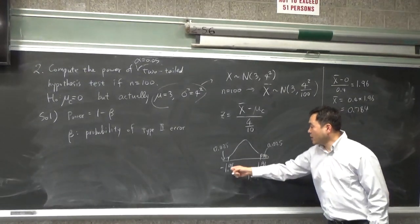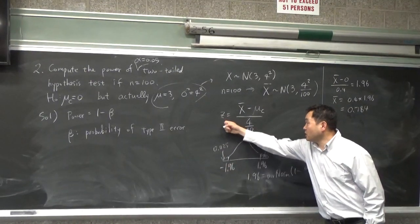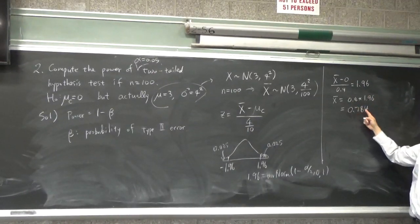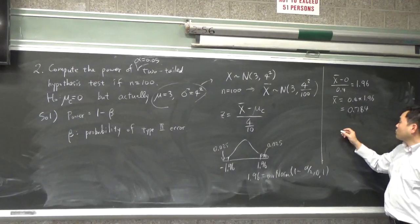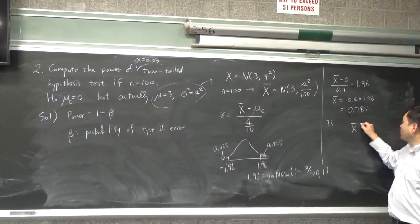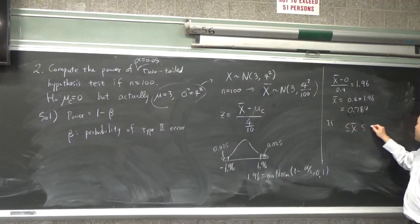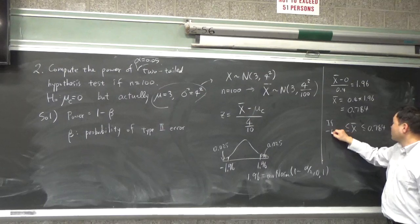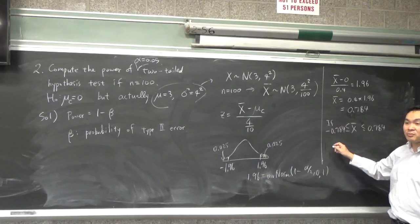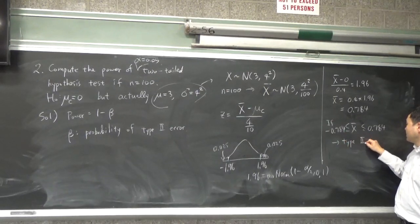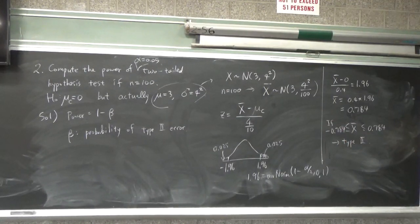And so this 1.96 corresponds to 0.784, and negative 1.96 value of z corresponds to x bar being negative 0.784. So which means that if x bar is between 0.784 and negative 0.784, then we have type 2 error. Is this okay so far?